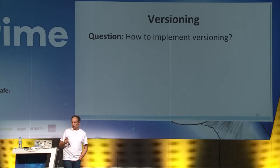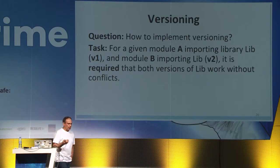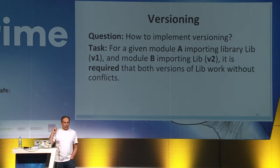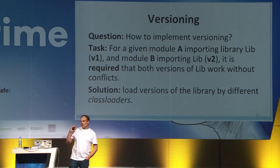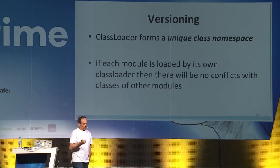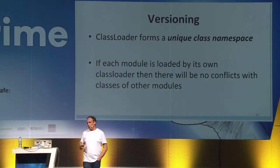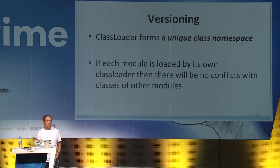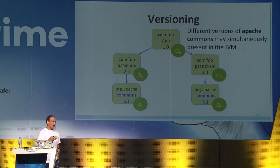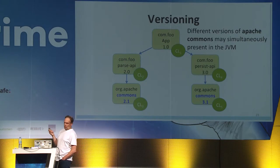Let's think about how to implement versioning. For a given module A importing library lib at version v1 and module B importing library lib at version v2, it is required that both versions of lib work without conflicts. Java has had class loaders since day one. Class loaders provide unique namespaces, so a single JVM can load two different classes with the same fully qualified name if both are loaded by different class loaders. So if each module is loaded by its own class loader, classes of one module won't conflict with classes of other modules.